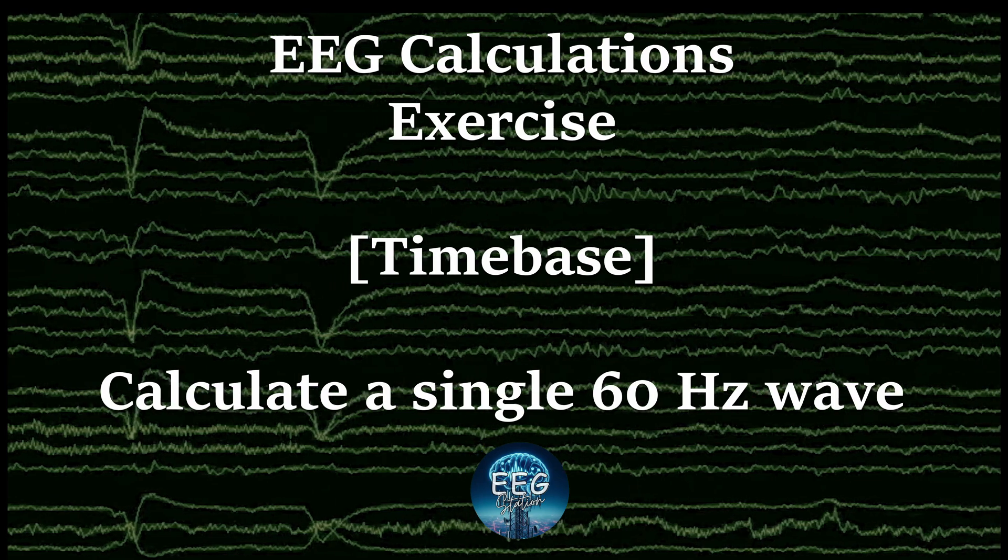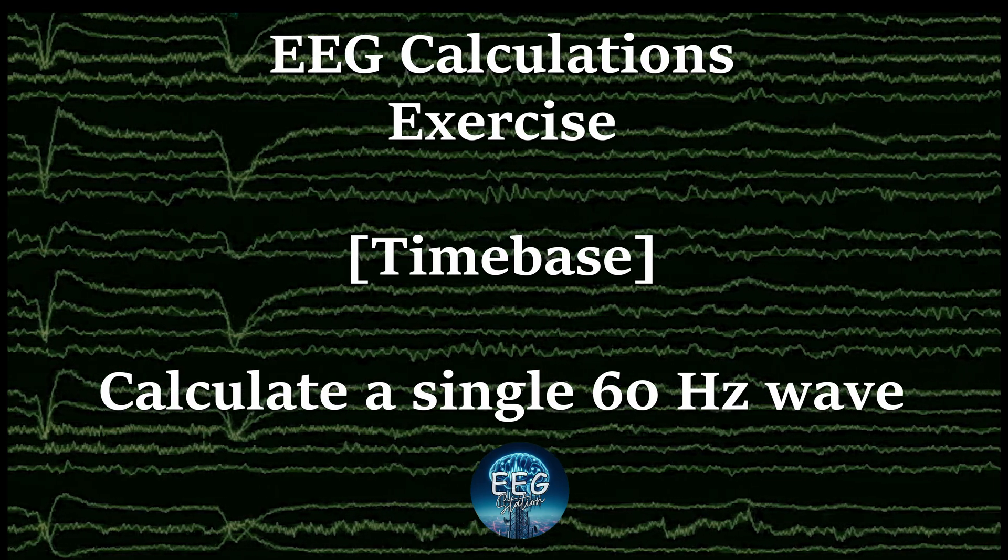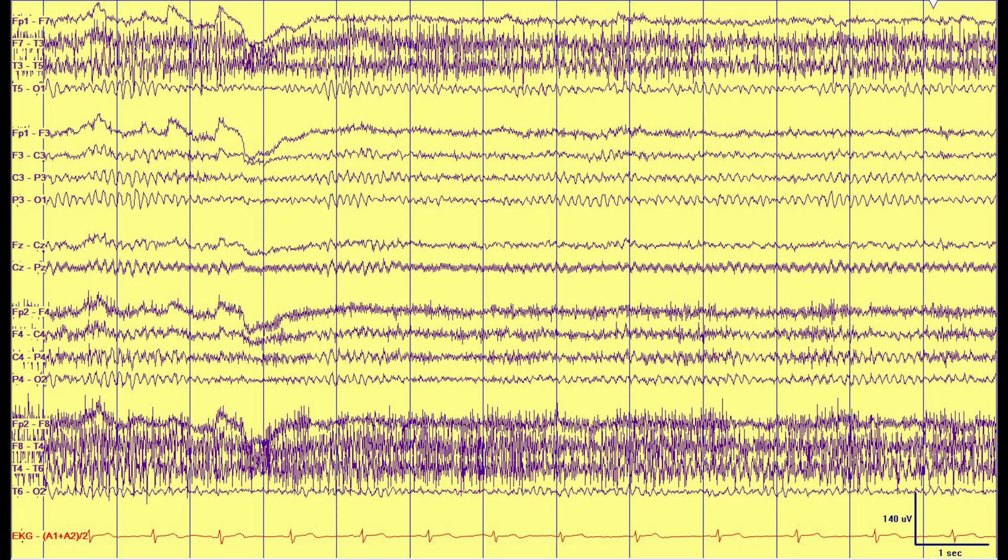Welcome to today's exercise. We are going to calculate manually a 60 Hertz wave, 60 Hertz AC interference. You can see in the CZPZ channel right here that there's localized 60 Hertz artifact which is confined to that channel. 60 Hertz artifact alternates exactly 60 times per second alternating current in the United States, and in Europe that is 50 Hertz.